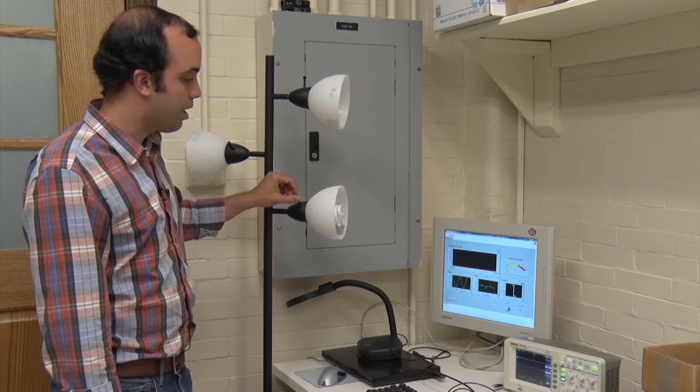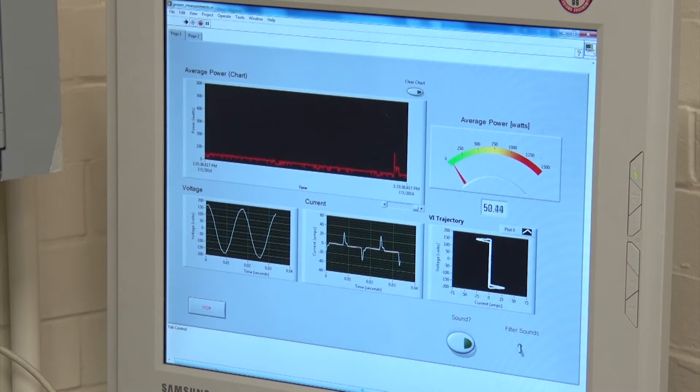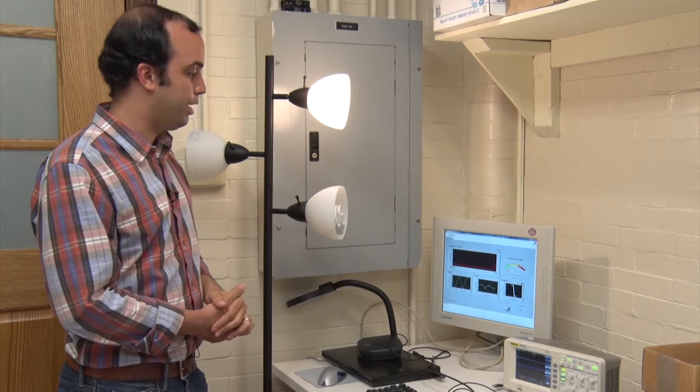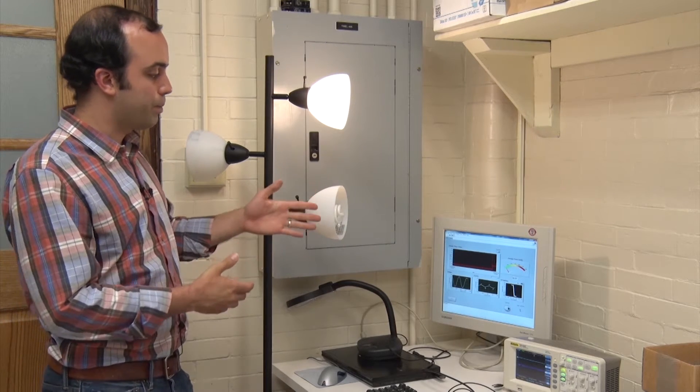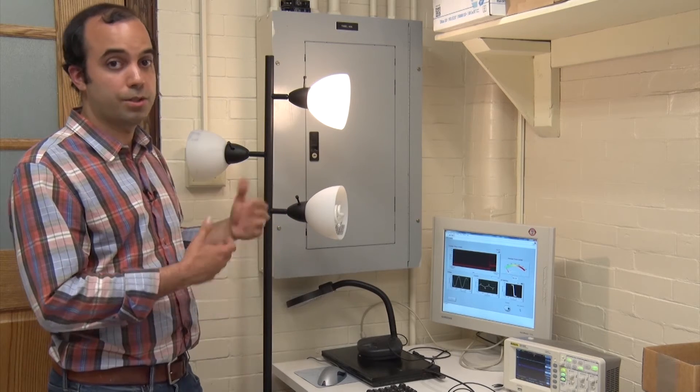But as soon as I turn on another appliance, let's say, for example, I want to turn on an incandescent light, this shape will actually change because the current has changed. And we're using that representation to understand what type of appliance actually turned on.